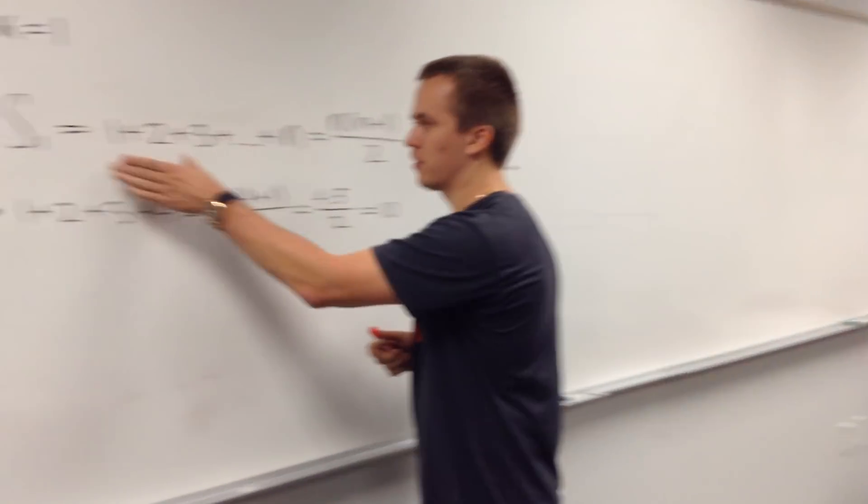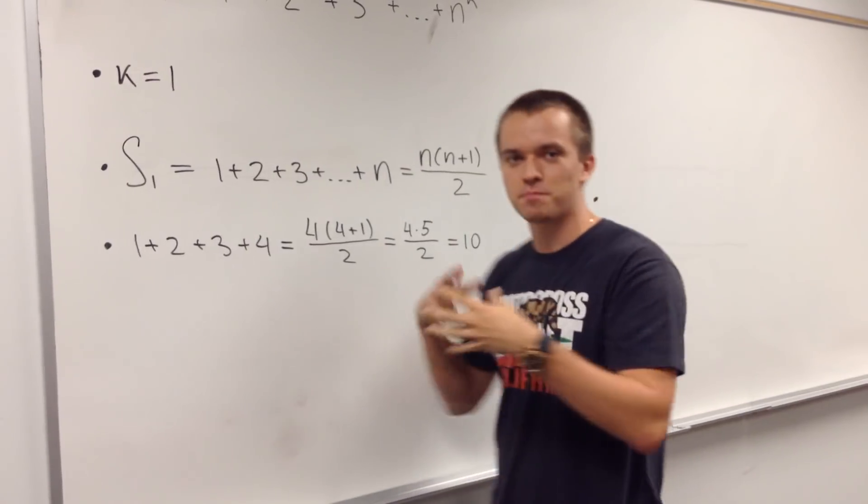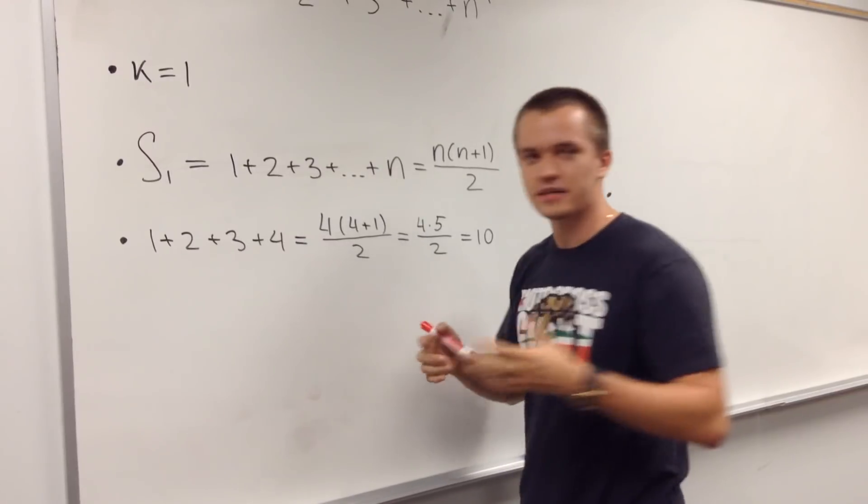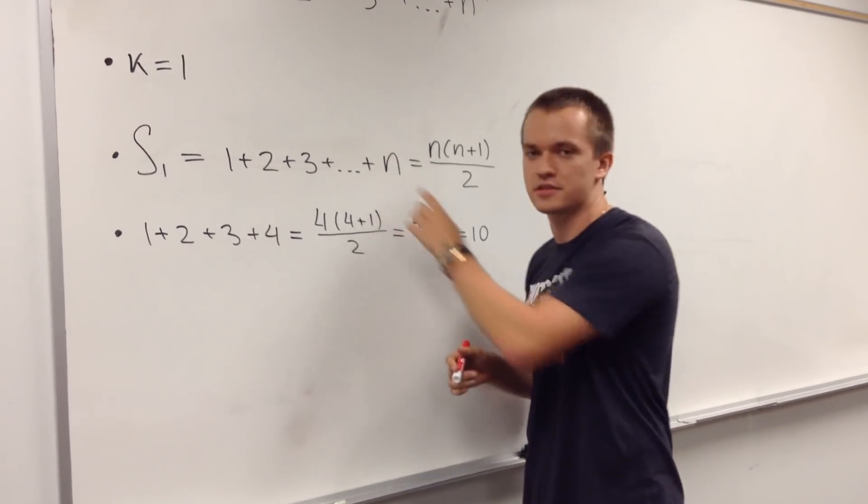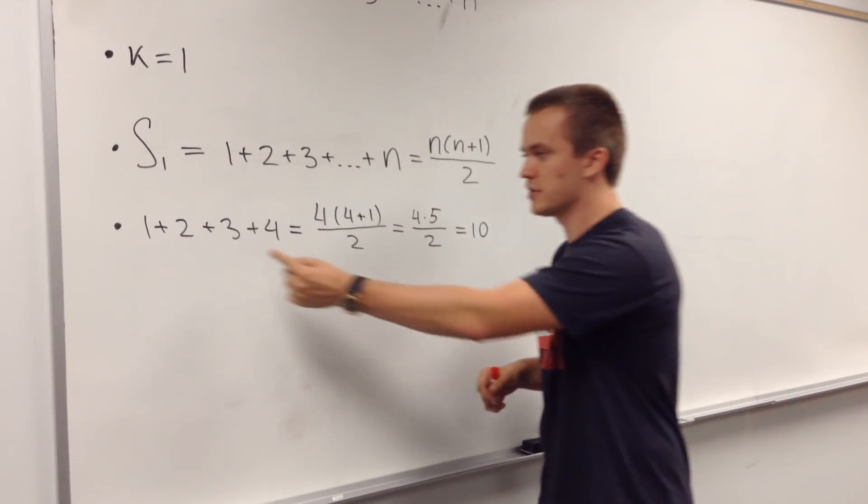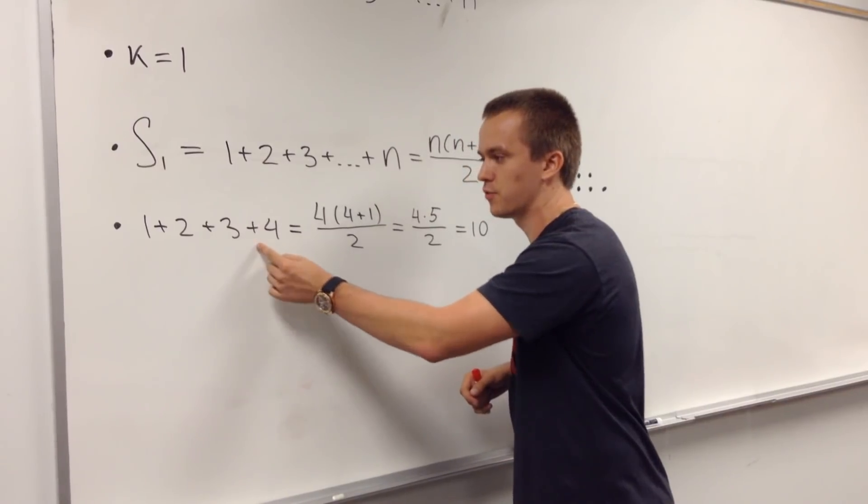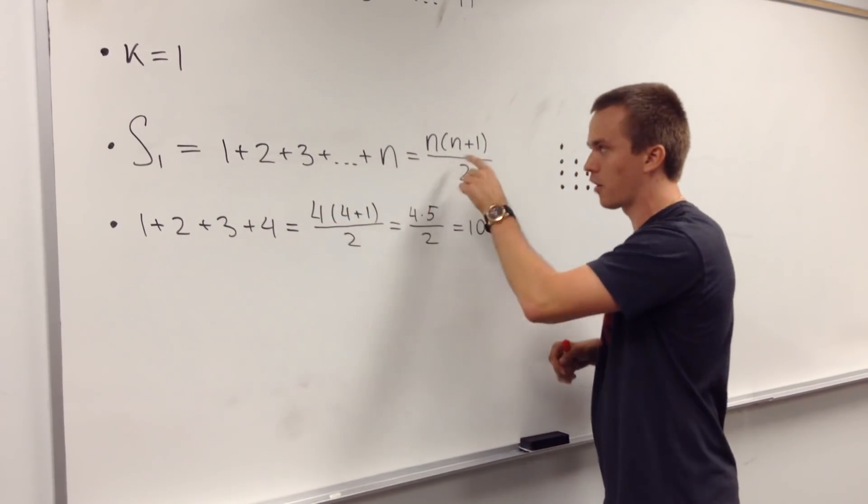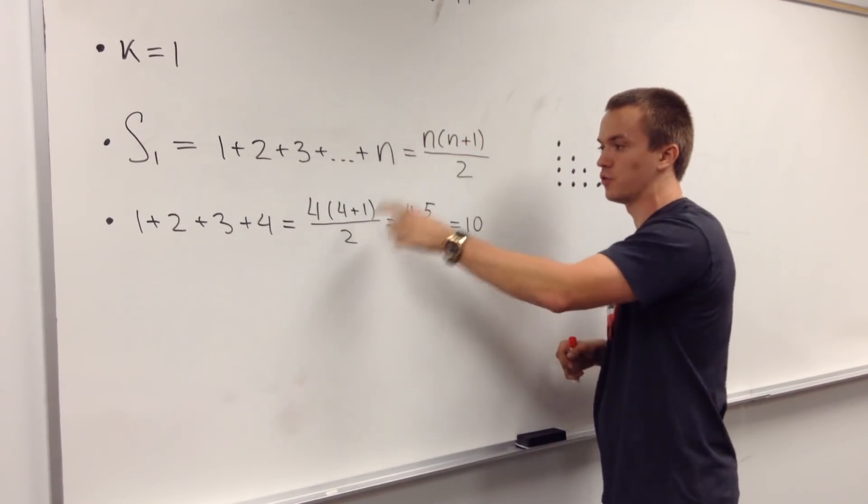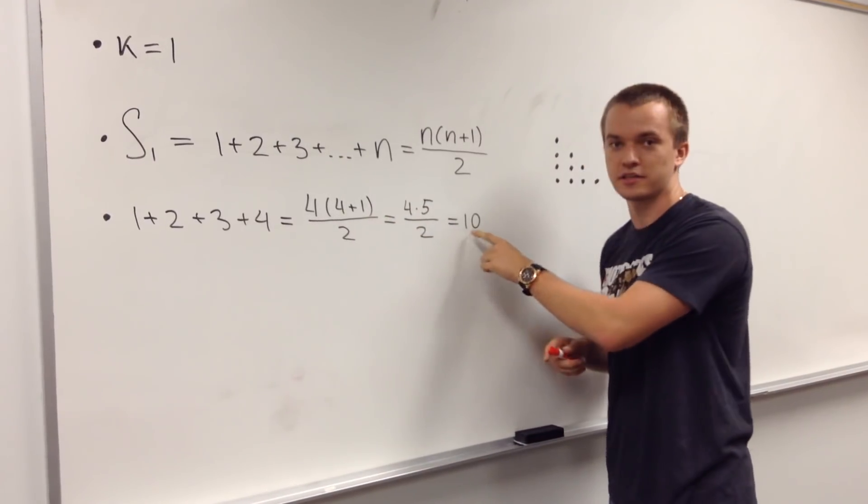Okay guys, we just found this general formula and let me show what the picture stands behind this. So let's take just some simple case when n is equal to 4. So in this case we have 1 plus 2 plus 3 plus 4 equal to this sum. I just plug in my n equal to 4 into this formula and I got result as 10.